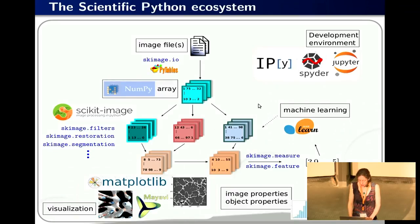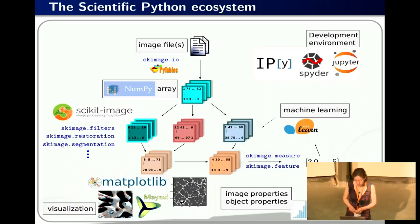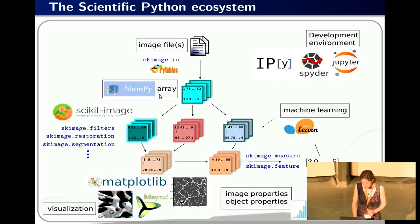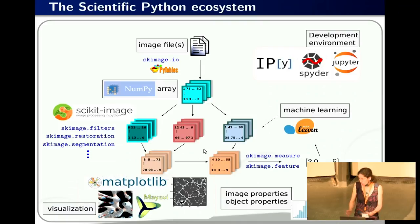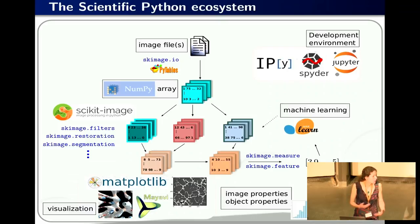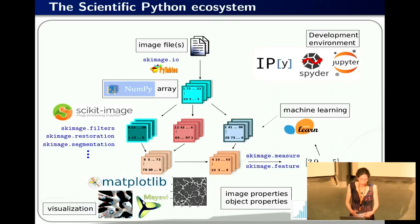scikit-image interacts well with the rest of the scientific Python ecosystem. You can open a file from disk as a NumPy array, apply filters to get new NumPy arrays, and since you're working with NumPy arrays, you can also use other Python modules like scikit-learn for machine learning on the same data objects. You can also do visualization using the usual scientific Python modules like Matplotlib, Mayavi, and so on.